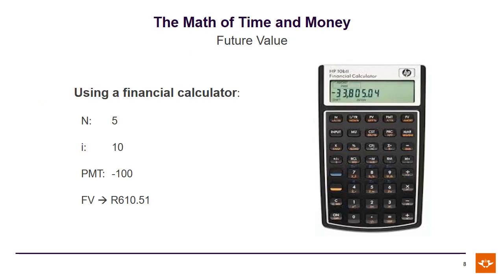And to make your life really easy — and I would very much recommend this — using your financial calculator, input N equals 5, I/Y equals 10, PMT equals minus 100, and with the click of a button, your future value falls out at R610.51.